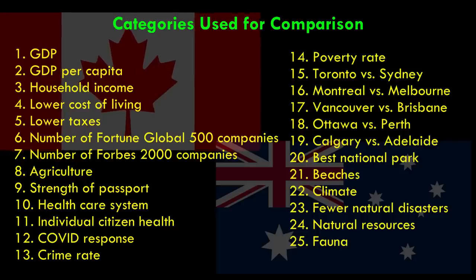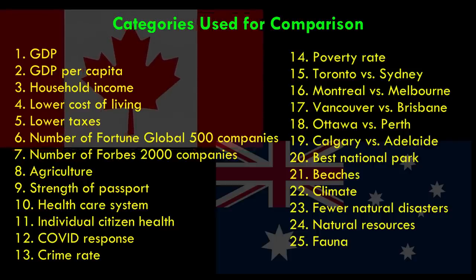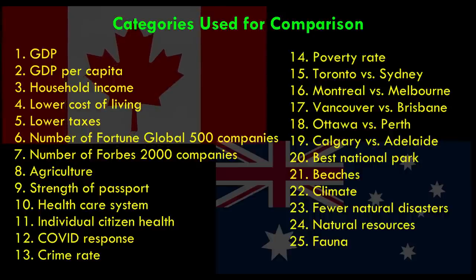For this comparison, I'm going to be using 25 different categories and assigning a point to each country for each of these categories. They will range from economic indicators like GDP, taxes, cost of living, and poverty rate, to comparisons of the largest cities, physical geography including climate, beaches, national parks, and natural disasters — and more. So let's get down to it: Canada versus Australia.